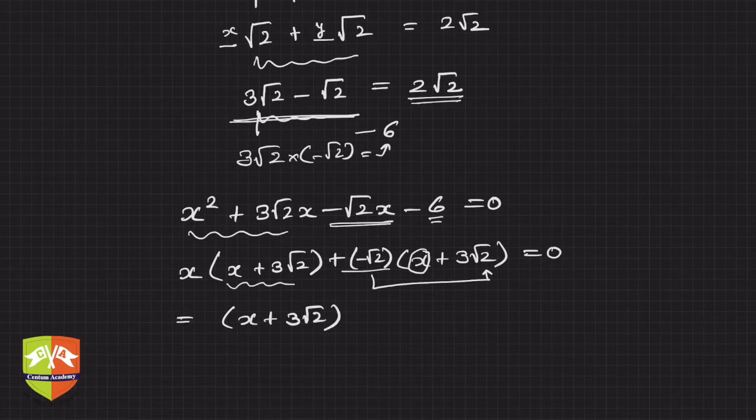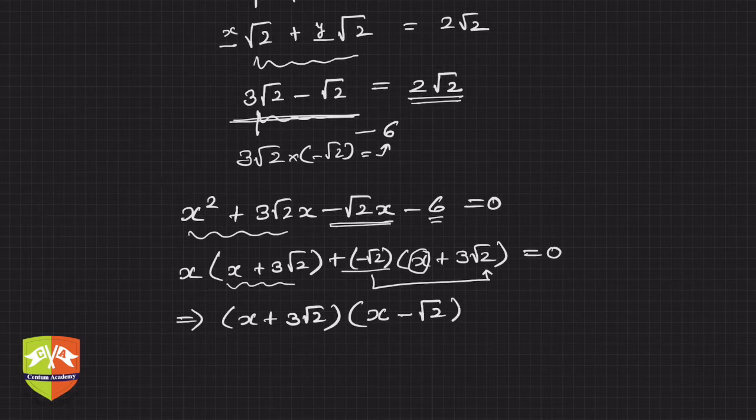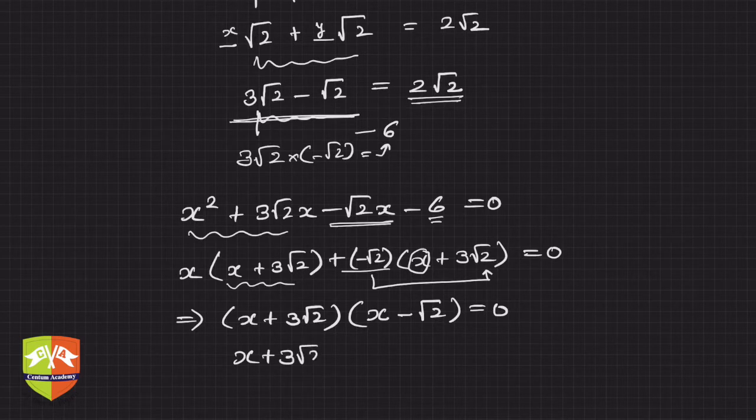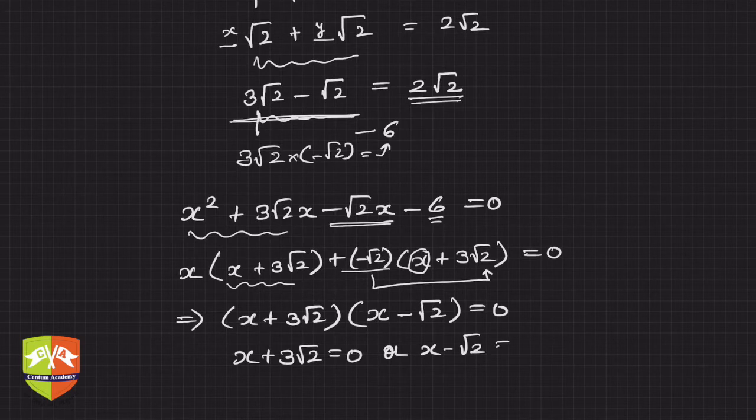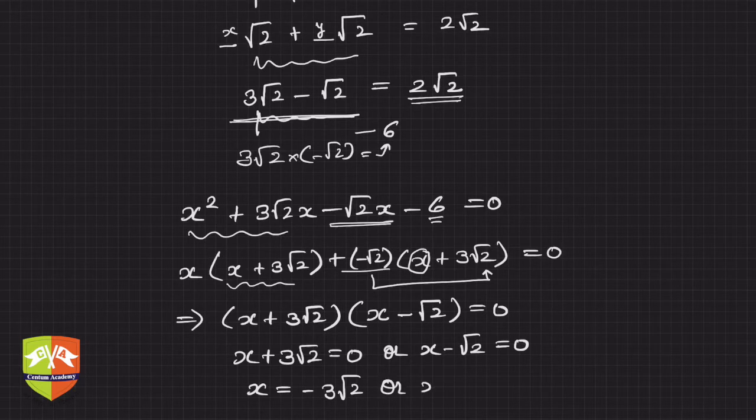Now let us take the common factor. So x + 3√2 is common to both, and the rest terms are x and -√2 equals 0. So hence, what will be the solution? x + 3√2 must be equal to 0, or x - √2 must be equal to 0. That means x equals -3√2 or x is √2.